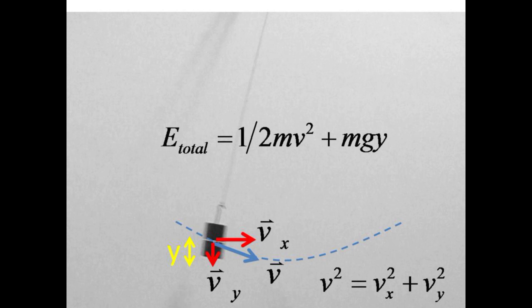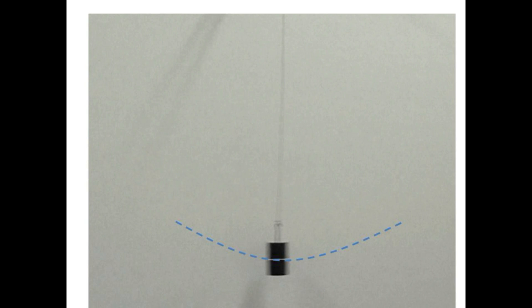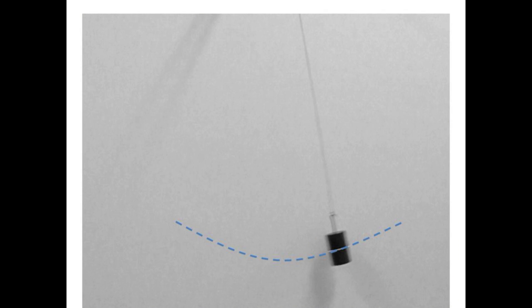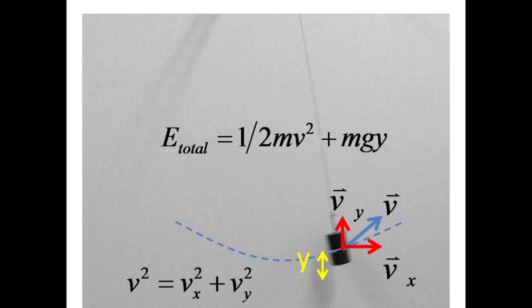Once again, the square of the speed is equal to the sum of vx squared plus vy squared. At the equilibrium position, that is the bottom of the swing, the potential energy has all been transferred to kinetic energy, one half mv squared. On the upward swing, kinetic energy is transferred back into potential energy.